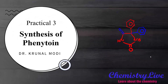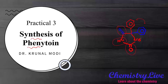Welcome to the Chemistry Live channel. Today we are discussing the synthesis of phenytoin, which is a very important chapter in the practical session. Phenytoin itself has two phenyl rings, two carbonyl groups, and two secondary amines, which make it a unique structure.